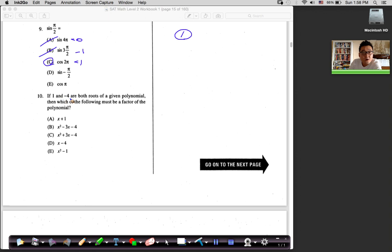All right, number 10. If 1 and negative 4 are both roots of a given polynomial, then which of the following must be a factor of a polynomial? Okay, you got to know the difference between the roots and factor, right?